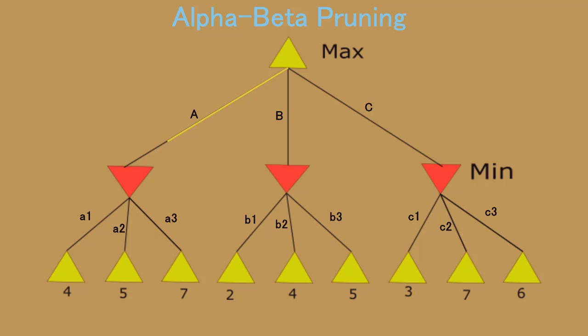Now next we study alpha-beta pruning. This way we expand and get a1, a2, a3. In this case, the min is 4, so 4 will be selected, just like in the previous case.